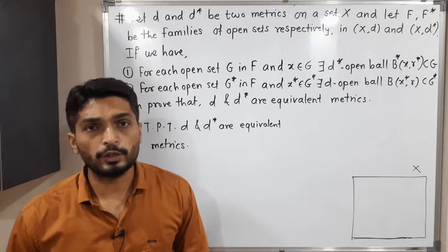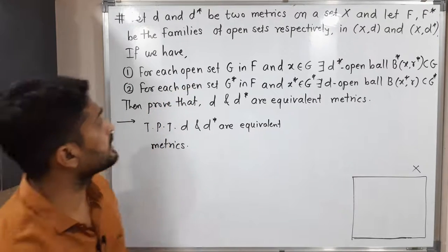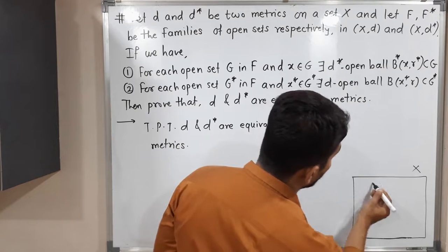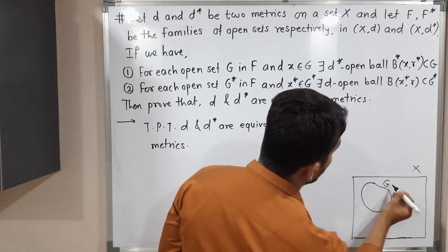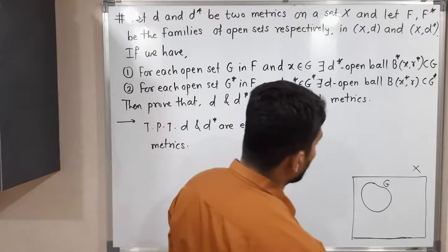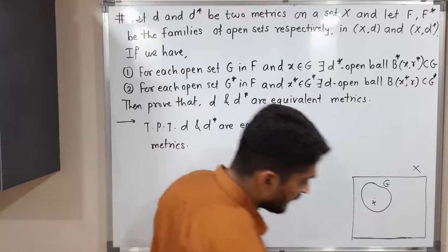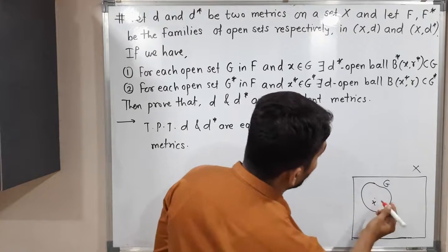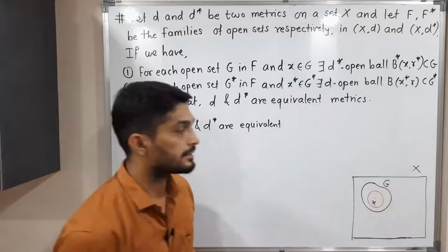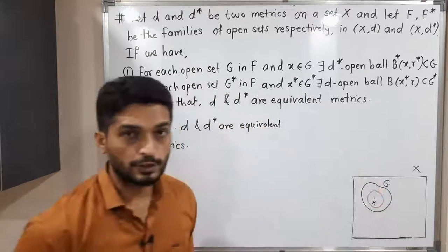They have given a very important piece of information. For each open set G in F — so suppose this is G, which is a D-open set — then for any x belonging to G, we can definitely find one D*-open ball around that point x such that that ball is a subset of G.